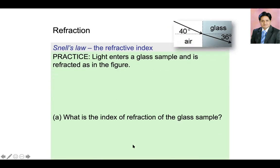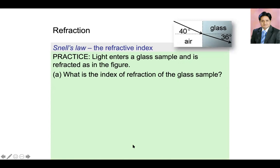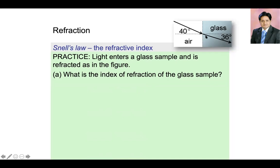Here is another question: calculate the refractive index of a glass sample. Light is entering at an angle of 40 degrees and it enters inside the glass at an angle of 36 degrees. So the angle of incidence is 40 degrees and the angle of refraction is 36 degrees. You are asked to calculate what is the index of refraction of the glass.